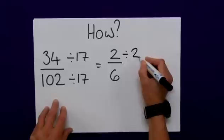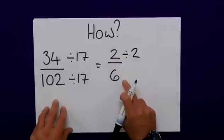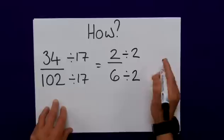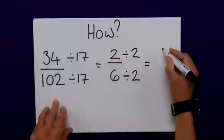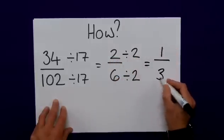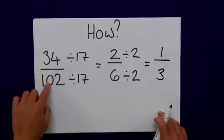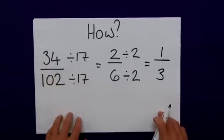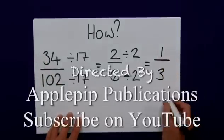2 divided by 2, remembering to do the same to the bottom as well, 6 divided by 2, and that is equal—2 divided by 2 is 1 and 6 divided by 2 is 3. So in actual fact, 34 over 102 is much easier to understand as 1 third. And I hope that helps.